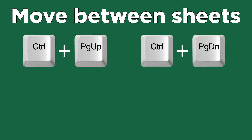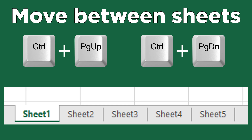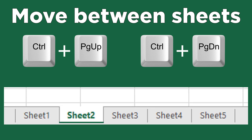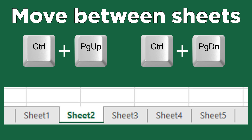Let's start with the beginner shortcuts. Control Page Up or Control Page Down will navigate between sheets or tabs within the same workbook. While simple, even many advanced users rely on their mouse to click between tabs. Please start using this shortcut today.